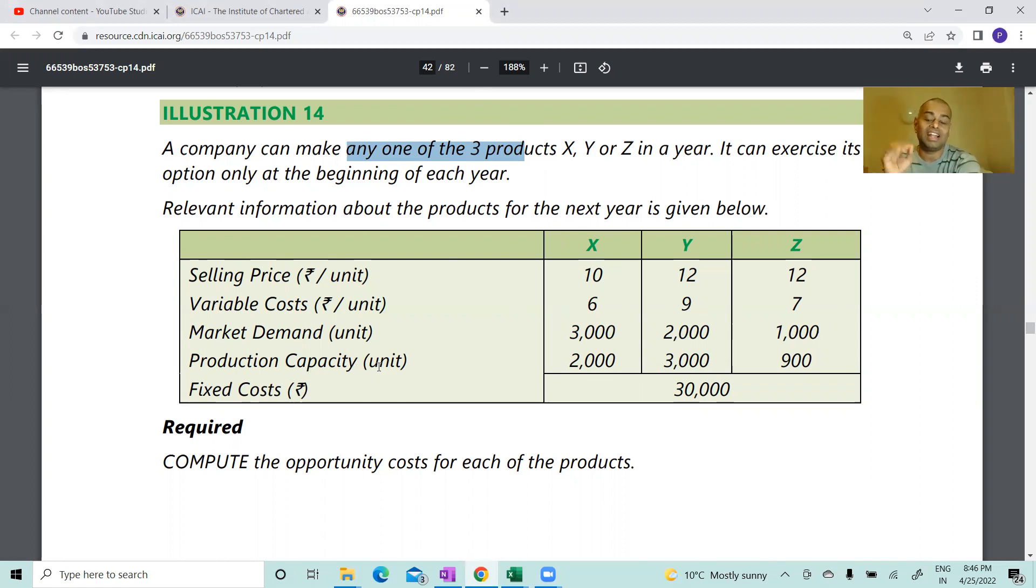One interesting thing - look at these two lines for product X. What is the market demand? 3000 units. That means if I manufacture 3000 units, the market can absorb it, I can sell it in the market. But my production capacity is 2000 units only. Can I sell 3000 units? Market conditions say yes, but I cannot manufacture. So what is the maximum I can sell? Lower of this or this.